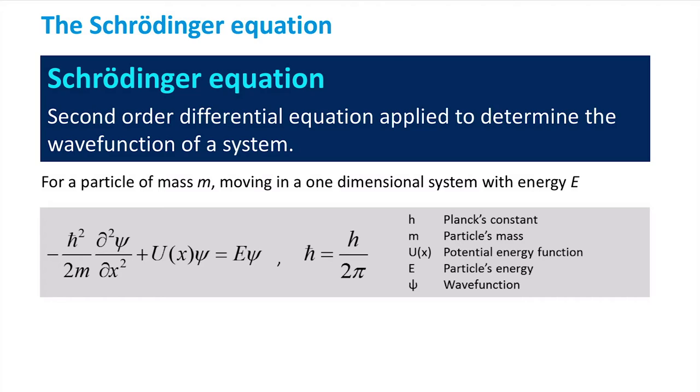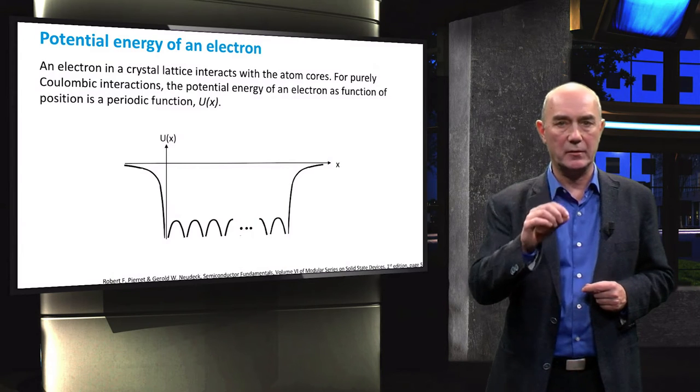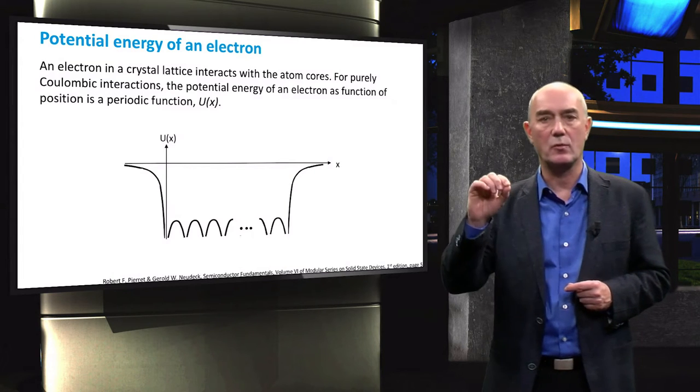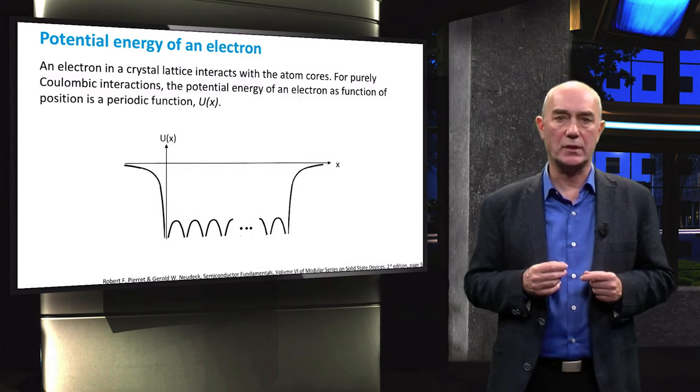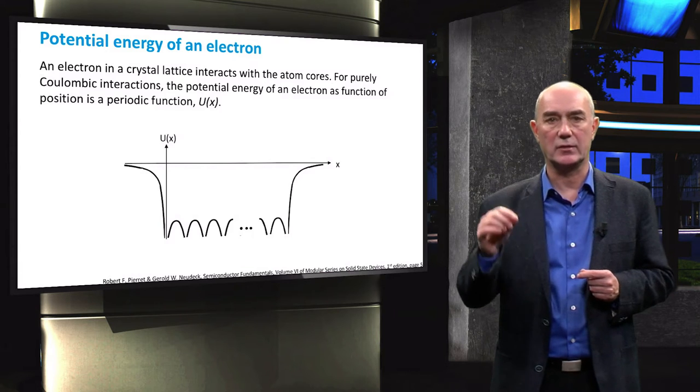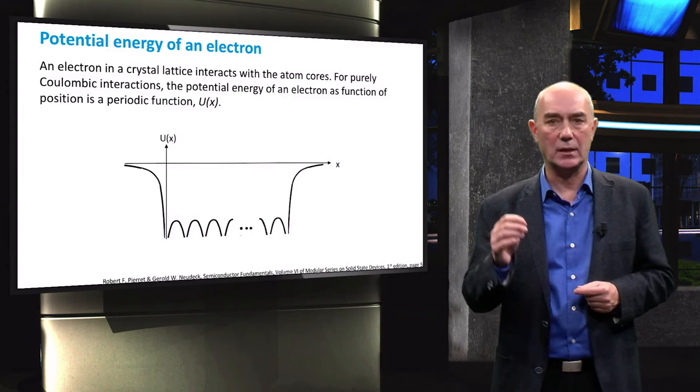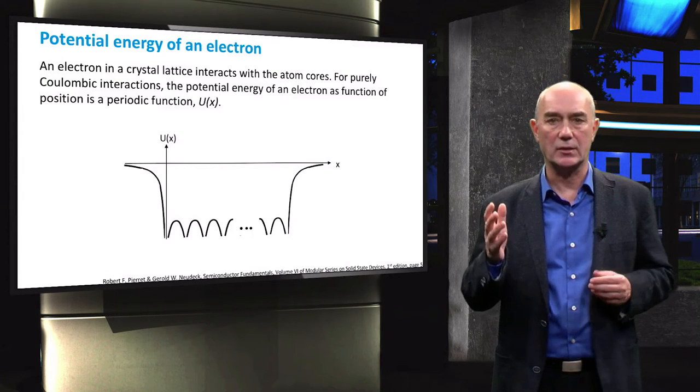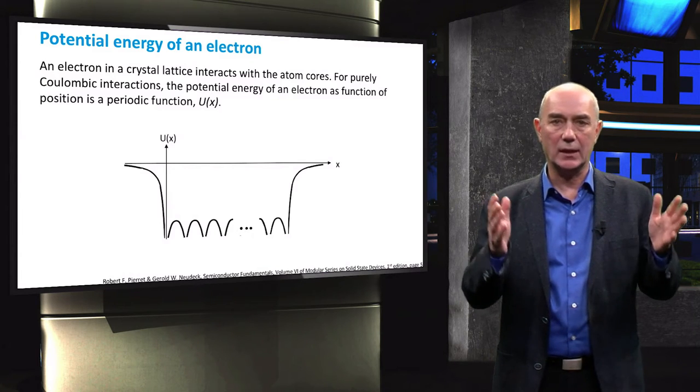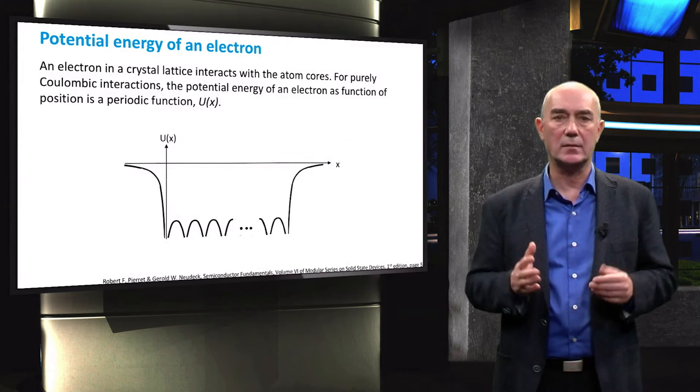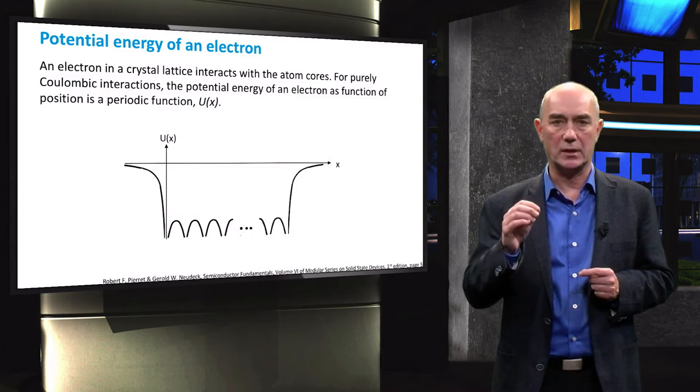This diagram shows the potential energy experienced by an electron crossing one-dimensional lattice. When considering only coulombic forces as a result of atom-core electron interactions, the resulting potential energy function will be periodic as shown in the slide. It is important to remark that electron-electron interactions within atoms are neglected, since their average contribution to the potential energy is almost zero.